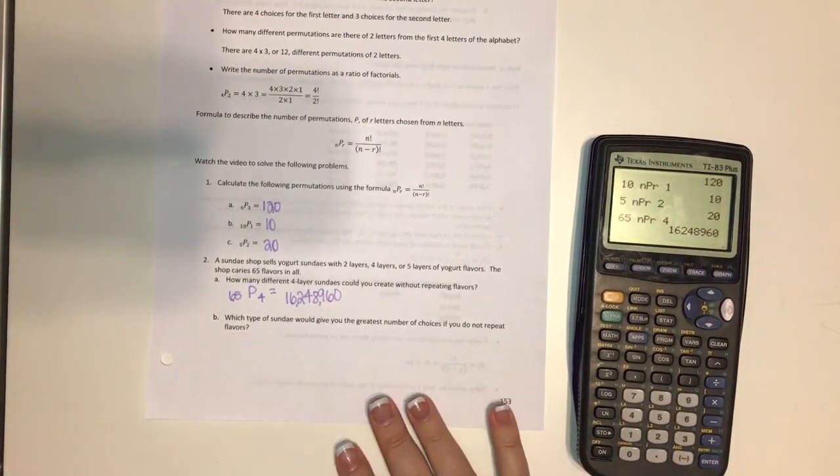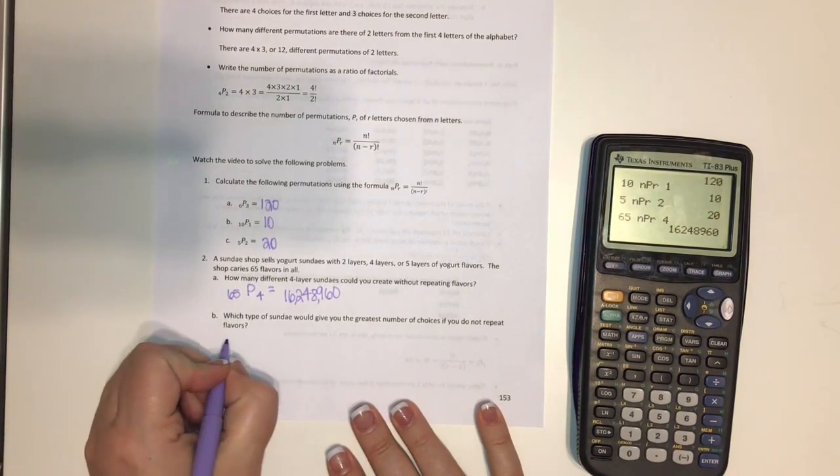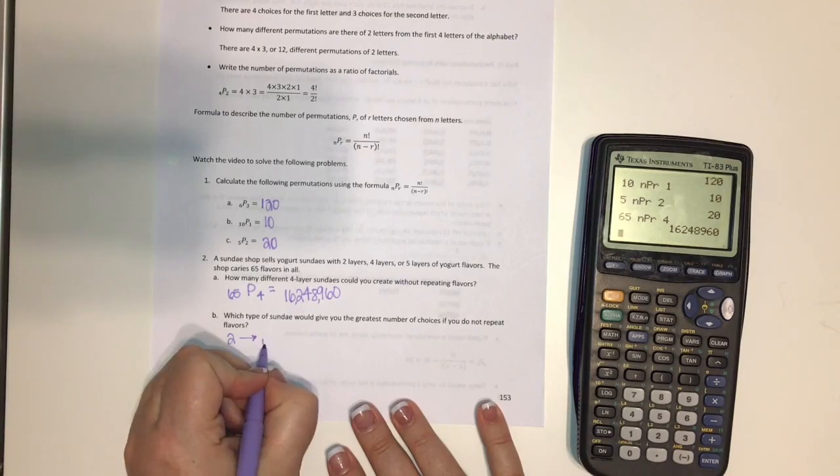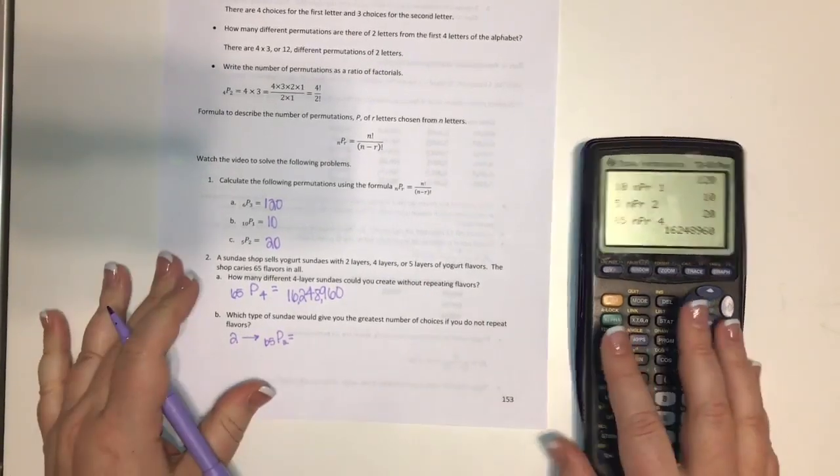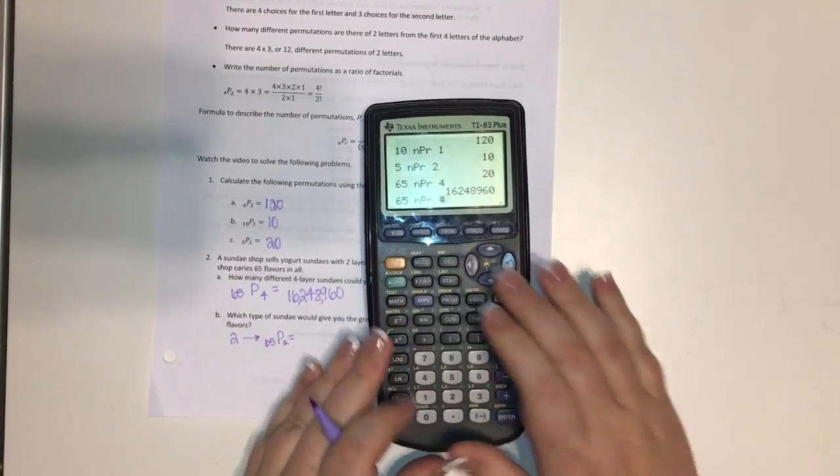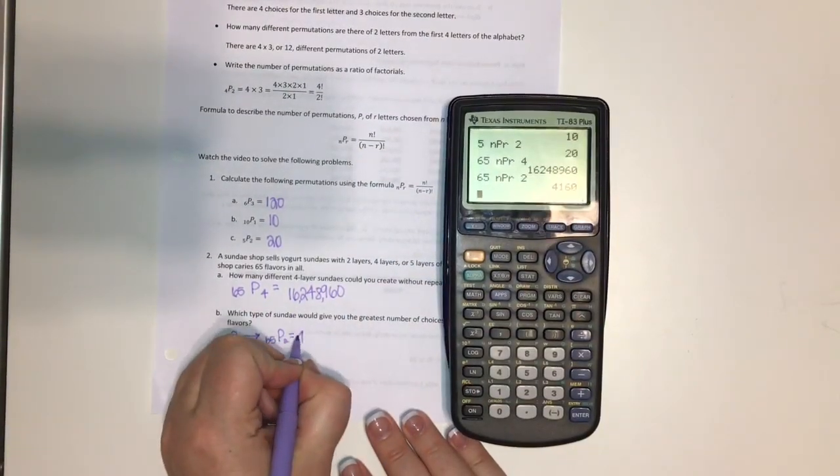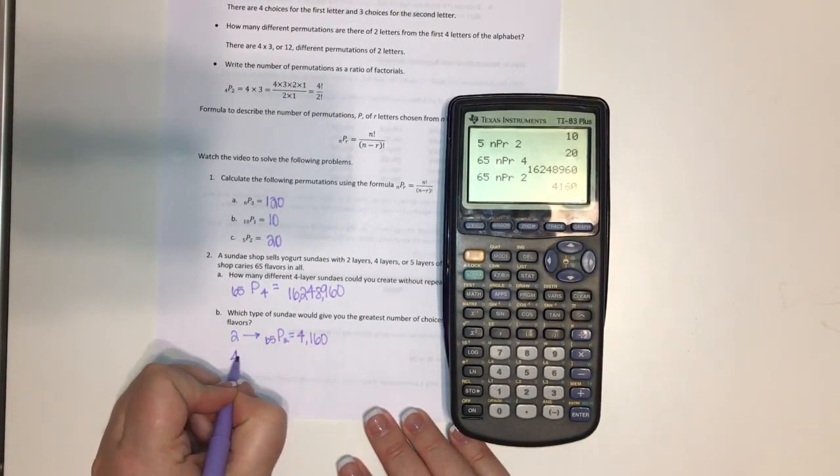So B says, which type of sundae would give you the greatest number of choices if you do not repeat flavors. So let's solve them. So our two-layer sundae, we would just stick it in our calculator like so. And we have 4,160 options.